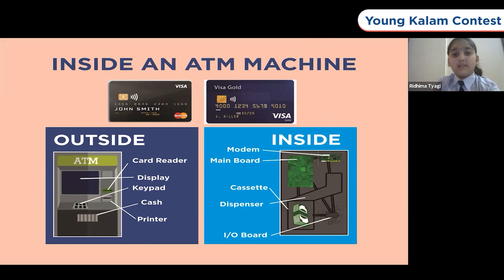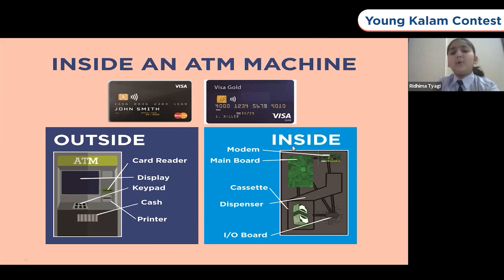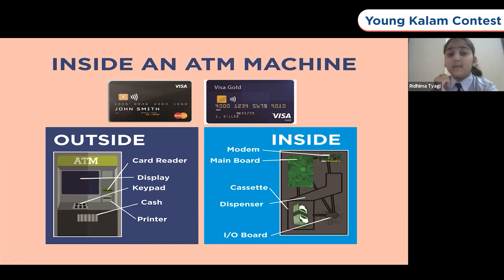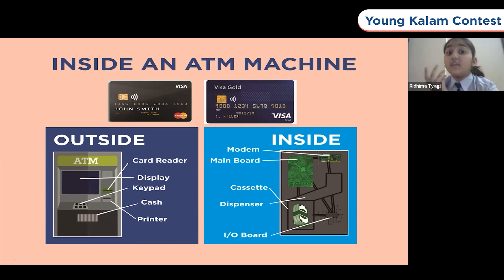He also told me that a card having a magnetic strip — called the debit or credit card — is required to dispense cash from the ATM. By simply putting your card, you can instantly get cold hard cash from your bank account. But how is that even possible? As we all know, ATMs are secure computers that hold money. But what's inside an ATM?